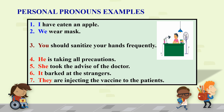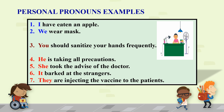Let us learn about personal pronouns more clearly with the help of some examples. I have eaten an apple. We wear mask. In these two sentences, the pronoun I is the first person singular, whereas We is the first person plural pronoun. You should sanitize your hands frequently. In this sentence, the pronoun You stands for second person singular and plural pronoun. He is taking all precautions.